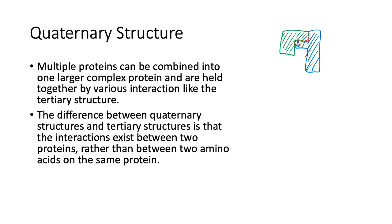The difference between quaternary structures and tertiary structures is that the interaction exists between two proteins rather than two amino acids on the same protein. So hydrogen bonding can hold these things together, but this hydrogen bonding can be in both the secondary structure, which is between the peptide links.